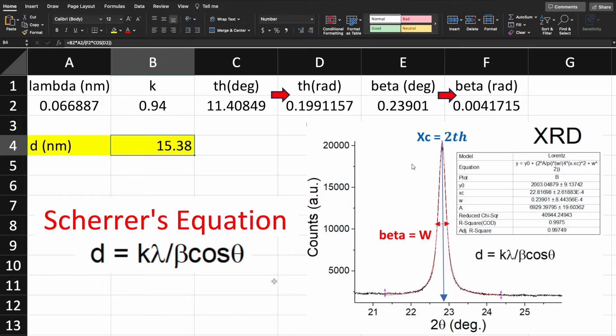In this video I will show you how to calculate grain size using the Scherrer equation. The formula is: grain size equals the Scherrer constant times the wavelength of x-ray divided by beta, which is the full width half maxima, times cos theta, where theta is half of the peak center.